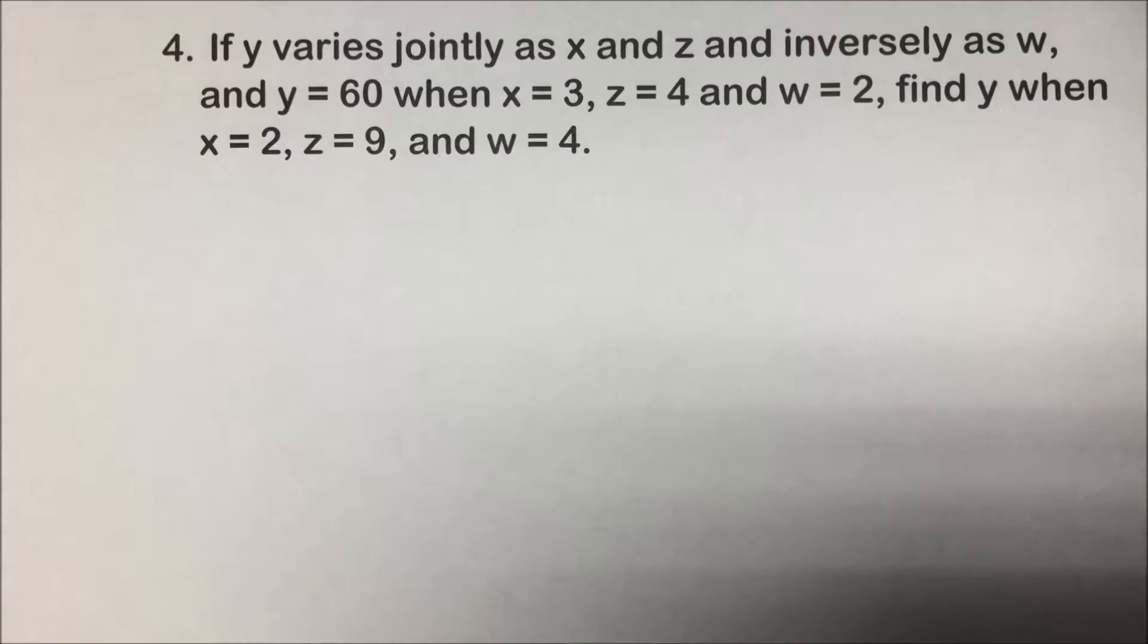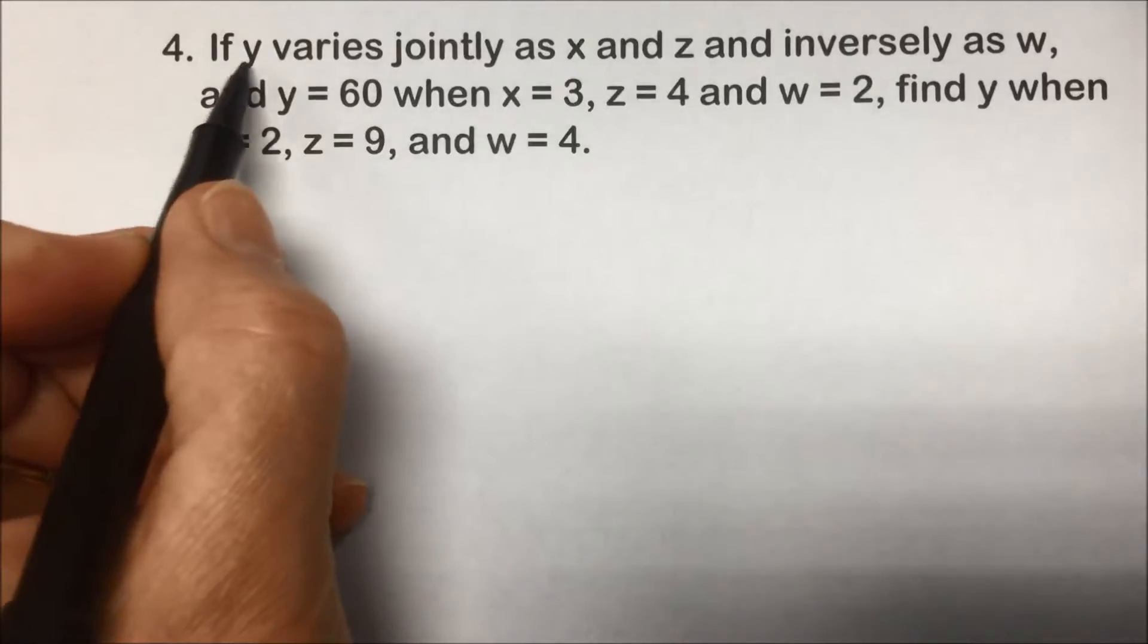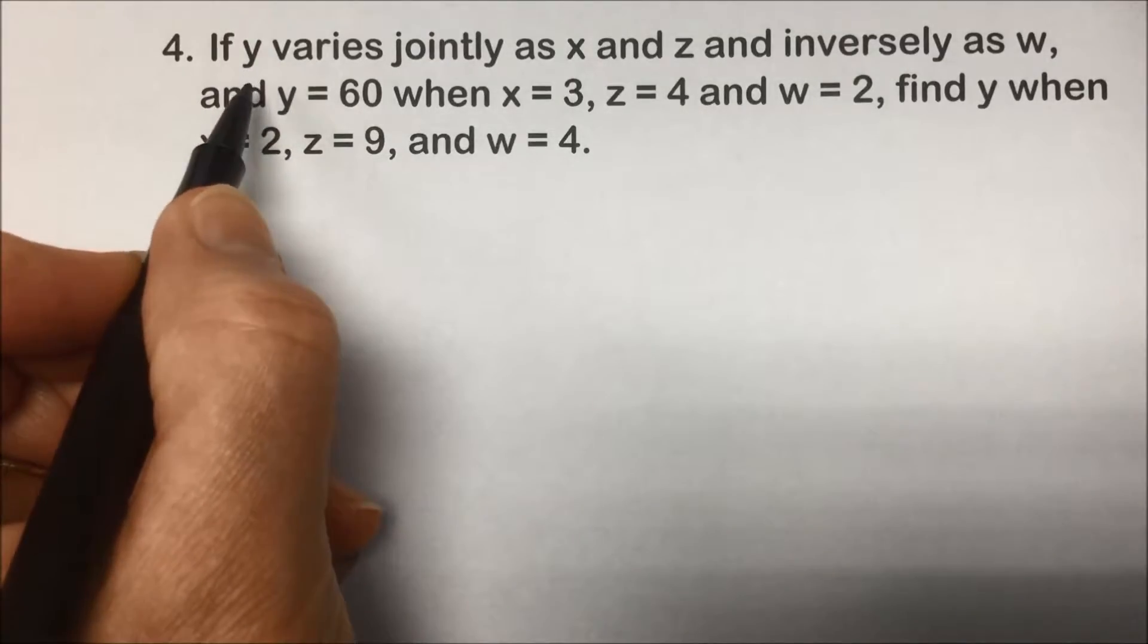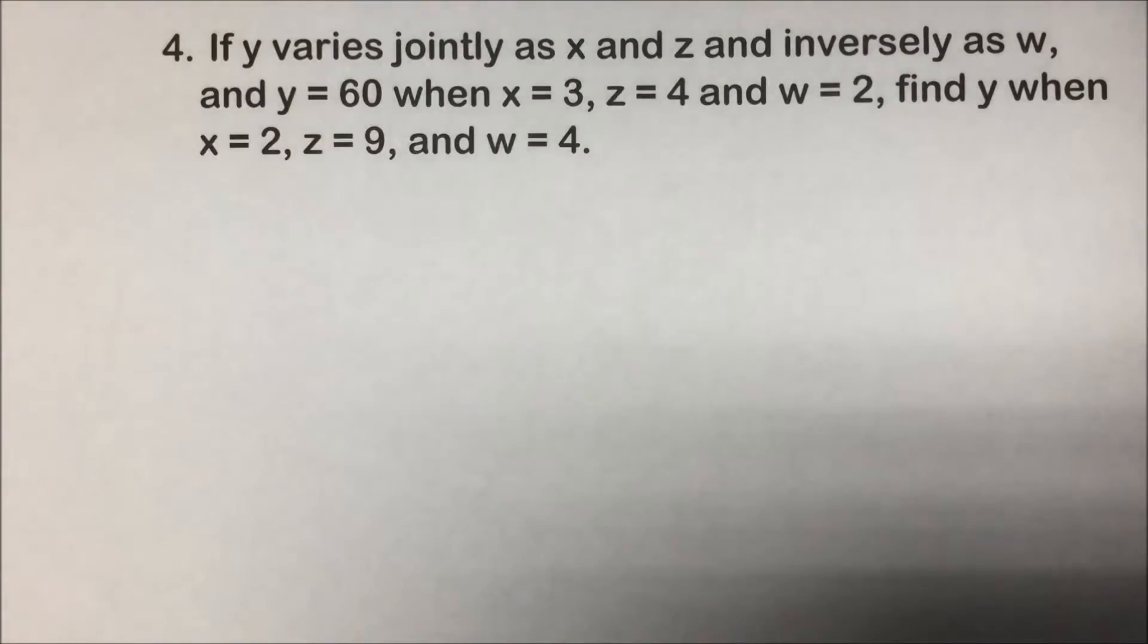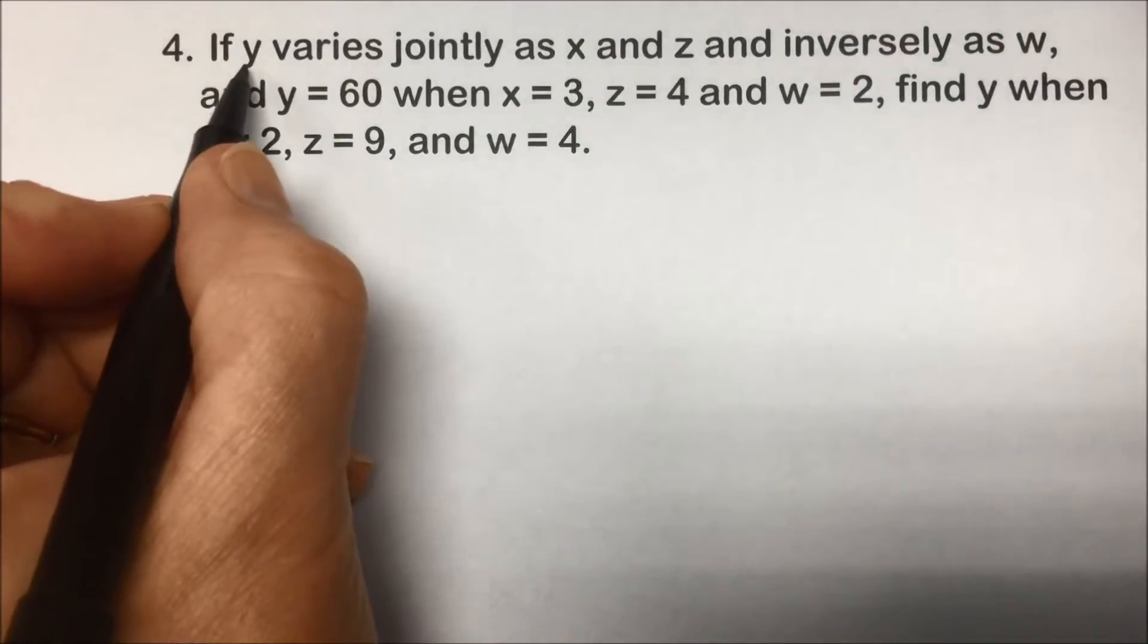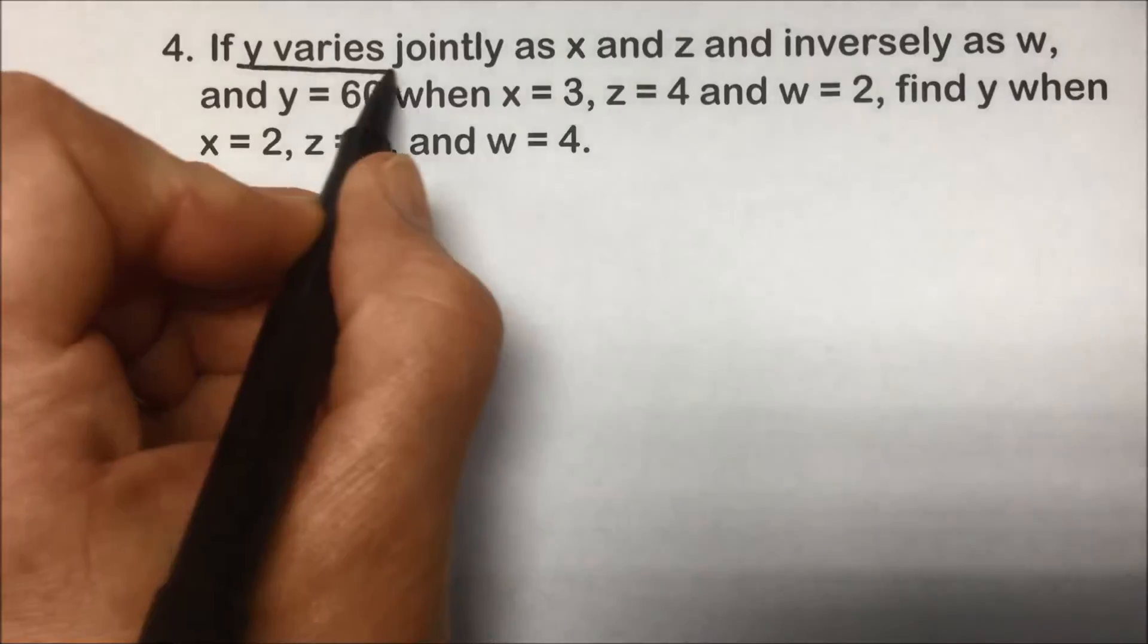A lot of information here, a lot of variables. Has a Campbell's soup feel to it. But if we follow the same procedure for just pairs when we have direct or inverse, we should be able to work our way through this.